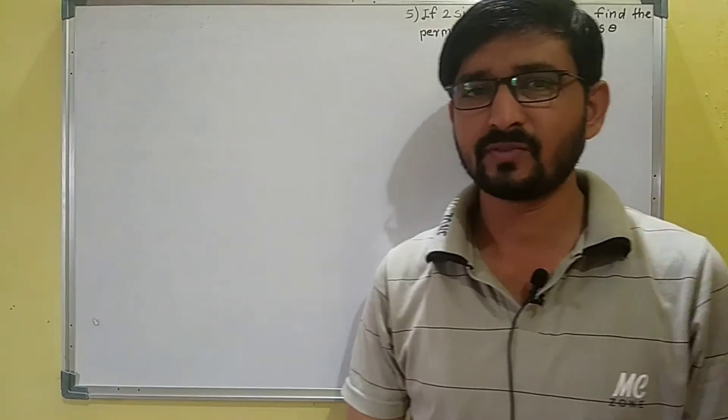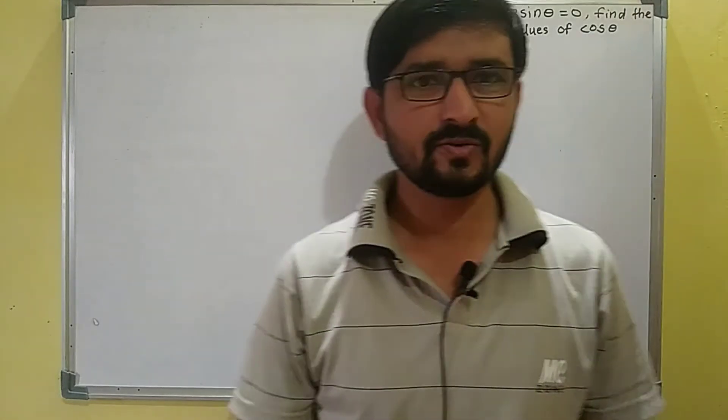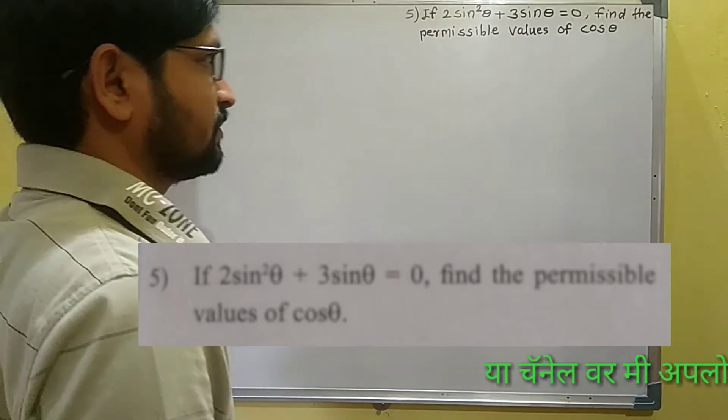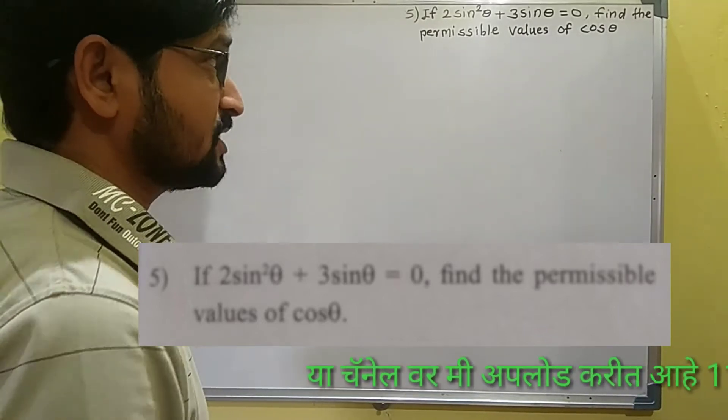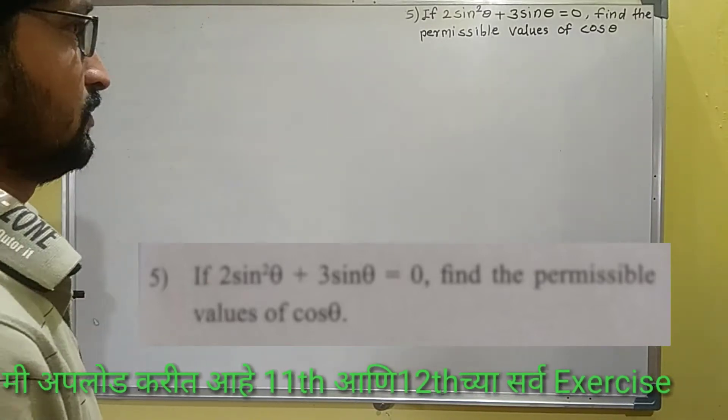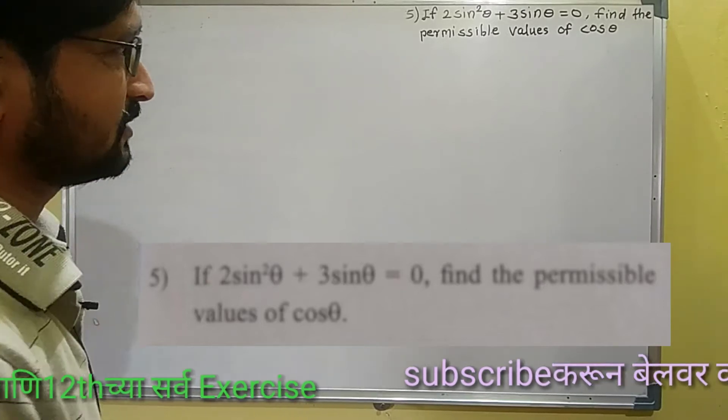Hello and welcome to 12th Math Easy. Our topic is Trigonometry Class 11, Exercise 2.2, Question Number 5. The problem shown on screen is: If 2sin²θ + 3sinθ = 0, find the permissible values of cosθ.